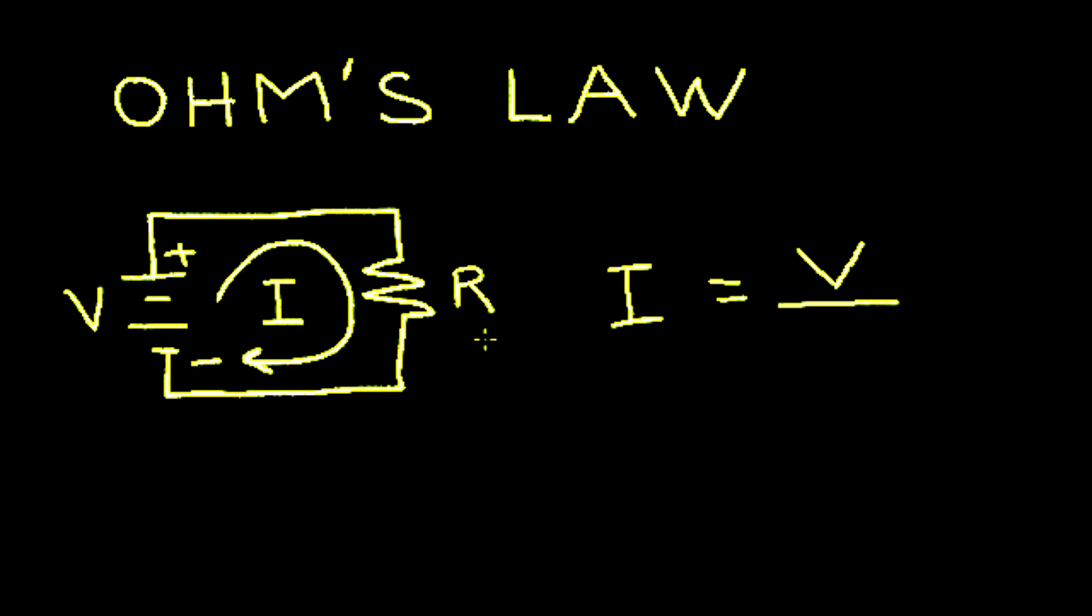But as resistance increases we have more resistance to current flow. So as resistance increases the current decreases. So there's an inverse relationship between resistance and current. So resistance goes in the denominator.